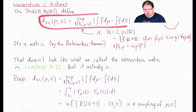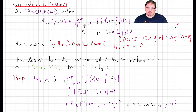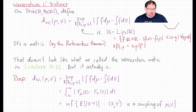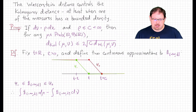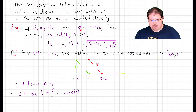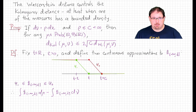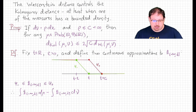We're going to work with this formulation of the Wasserstein metric because it's ideally set up for calculations that provide precise quantitative information about the rate of convergence in the Central Limit Theorem, and even more interesting questions after that. Before we head down that road, I want to show you that this Wasserstein metric actually controls the Kolmogorov distance, at least in the case where one of the two measures is absolutely continuous.